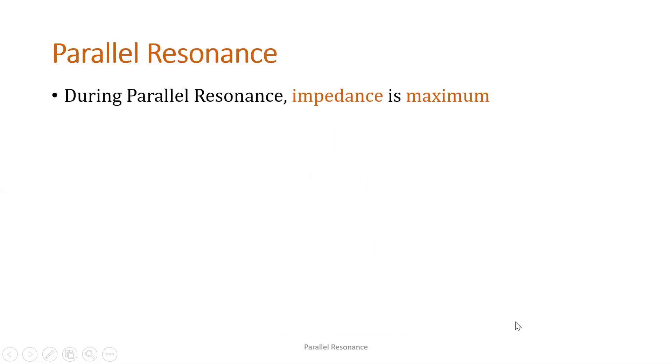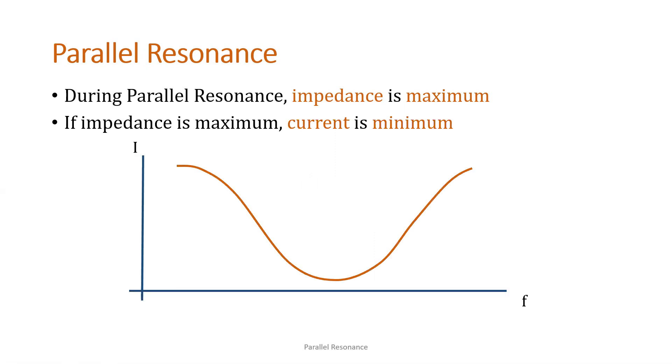So for parallel resonance, what happens is the impedance is at its maximum, so our current will be at its minimum. So if we have the current versus frequency graph, the point wherein the current is at its minimum is where the resonant frequency lies.